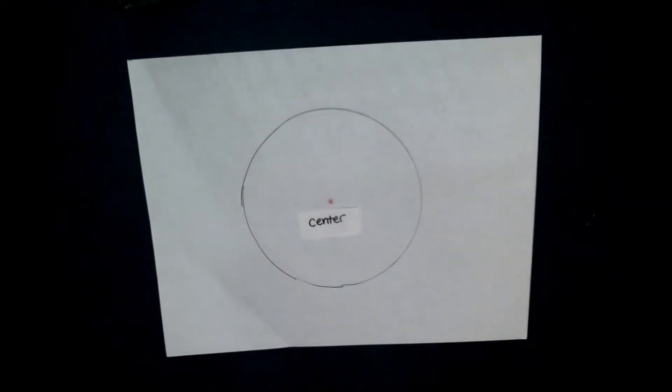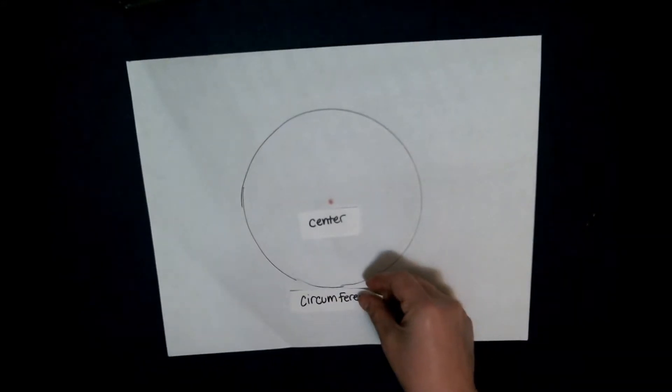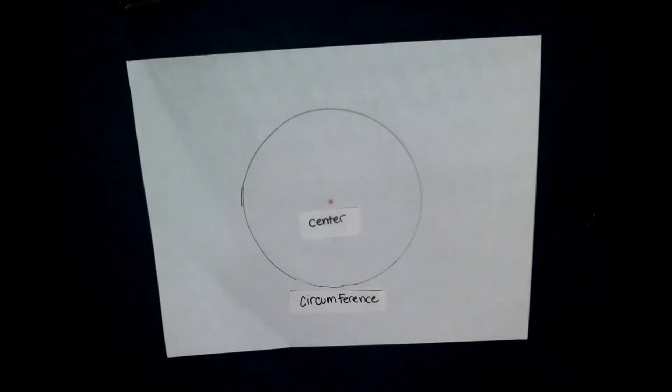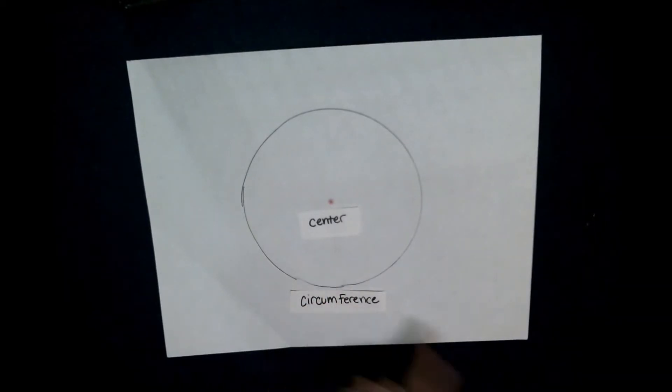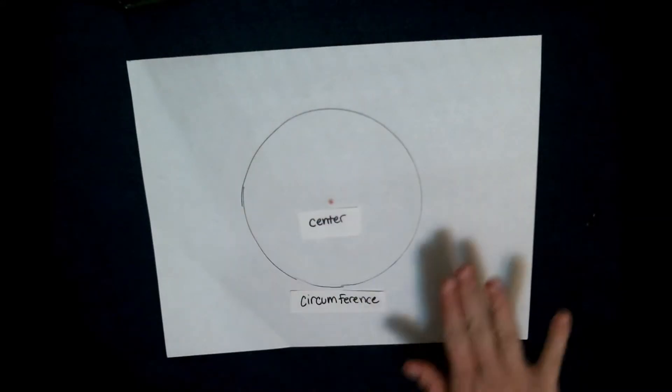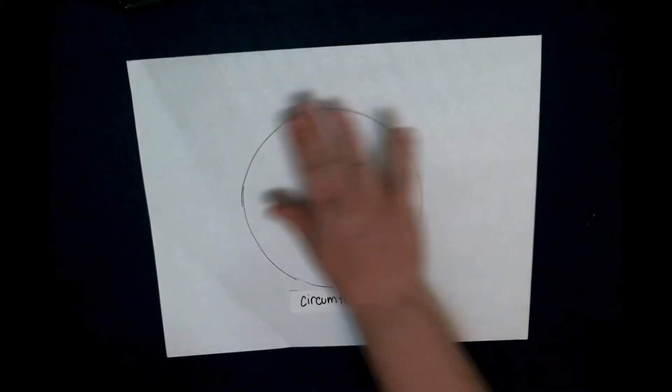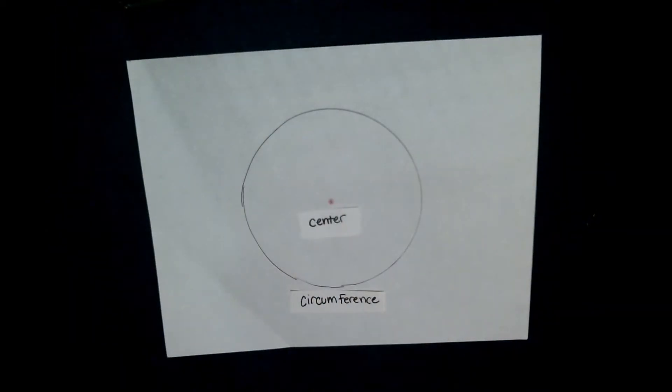However, does a circle have straight lines? No, it does not. It has just one big curvy line. So we have a special word for this. That's called the circumference of the circle. See the circ there? Circumference. So circumference is the line that goes around the circle, then closes the space and makes it a circle.